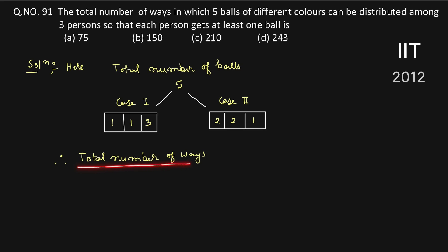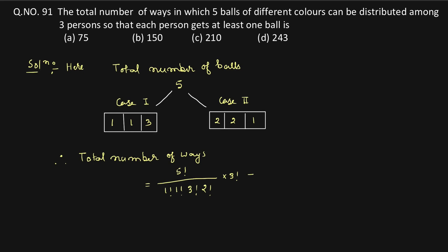We find the total number of ways, which equals: for case one, 5! divided by (1! × 1! × 3!), and since two conditions are repeated it's multiplied by 2!, then distributed among three persons so multiplied by 3!. Plus for case two, 5! divided by (2! × 2! × 1!), and since two conditions are repeated it's multiplied by 2!, then distributed among three persons so multiplied by 3!.